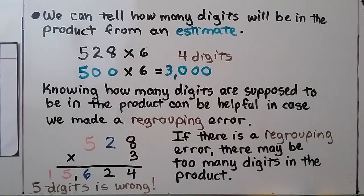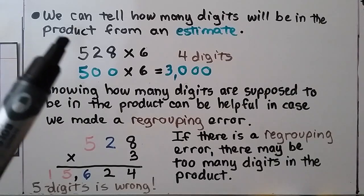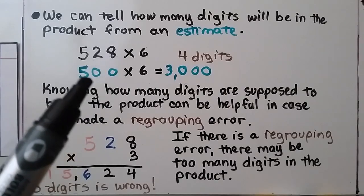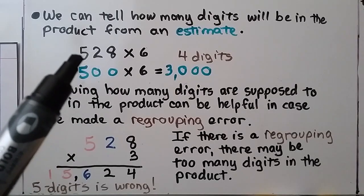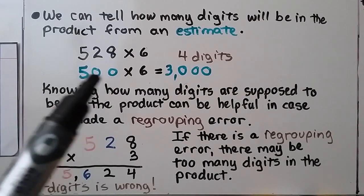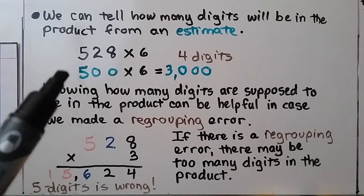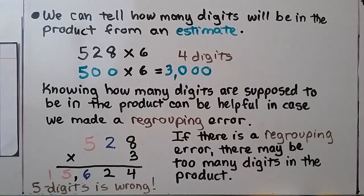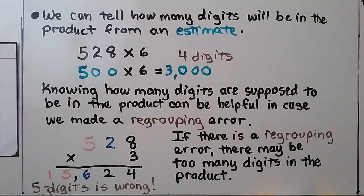We can tell how many digits will be in the product from an estimate. We have 528 times 6. The 2 tells the 5 to stay the same, so we get 500 when we round. We multiply 500 times 6, which is 3,000 — that's 4 digits. Knowing how many digits are supposed to be in the product can be helpful in case we made a regrouping error.